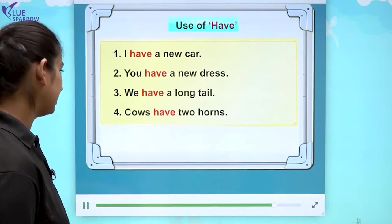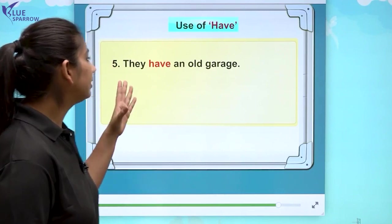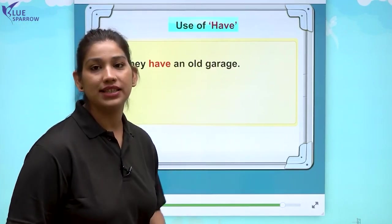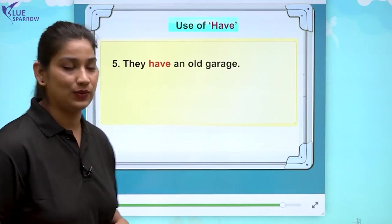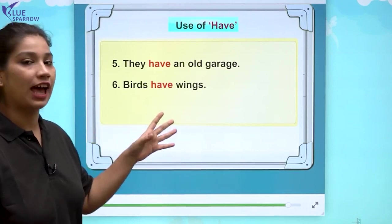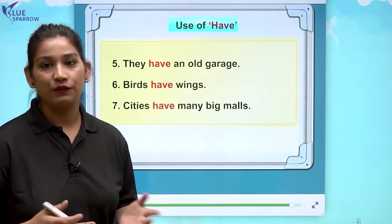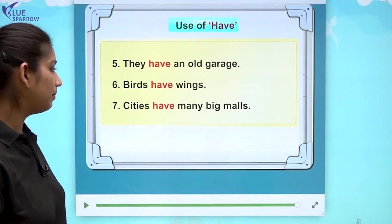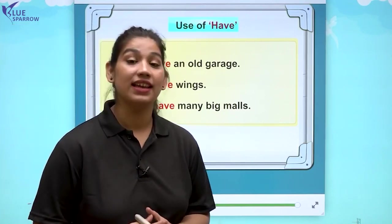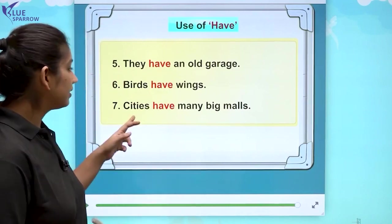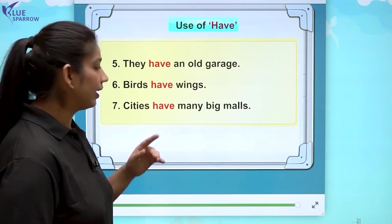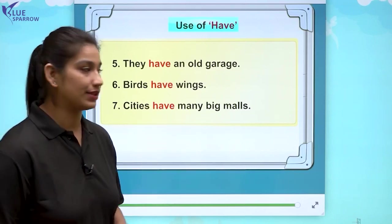Let's see more sentences. They have an old garage — they ke saath hum have ka use karte hai. Birds have wings — birds ke paas wings hoote hai. Cities have many big malls — cities mein bohut saare big malls hoote hai. Cities, birds — in sab ke saath S lagaya hai, which denotes the plural form, isliye ham ne inke saath have ka use kiya hai.